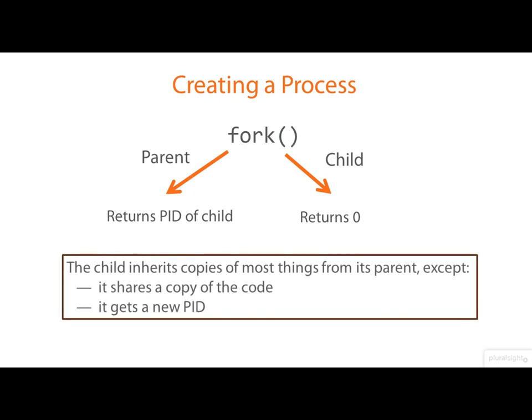The child inherits almost everything. It inherits copies of almost everything from its parents. It doesn't get a copy of the code. It shares the code segment. And of course, it gets a new process ID. But it inherits things like the environment, the open file descriptors, and so on.